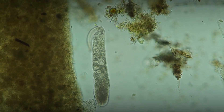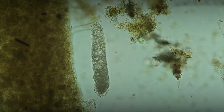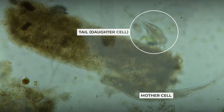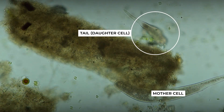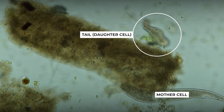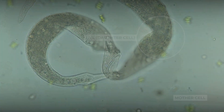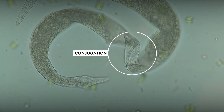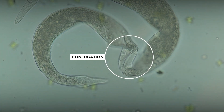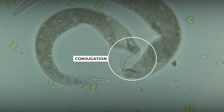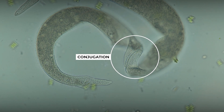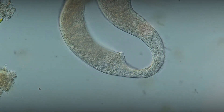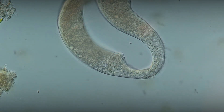Like all unicellular organisms, Dileptis can reproduce by division, where the tail part of the mother cell separates and a second cell develops from it. But it can also procreate through bisexual reproduction, for which two individuals merge their proboscis to exchange genetic information.